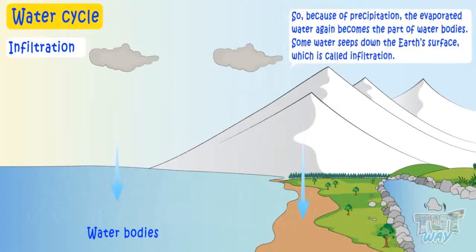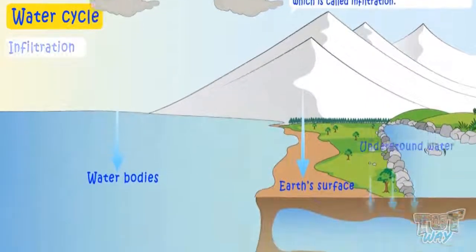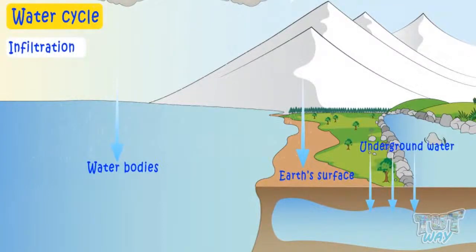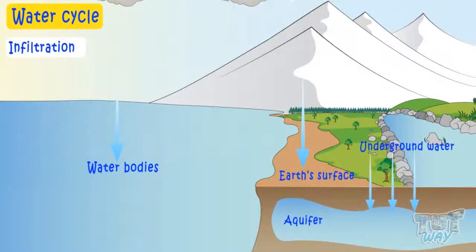Some water seeps down the earth's surface, which is called infiltration, and replenishes the aquifers, which can store fresh water for long periods of time.